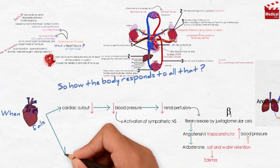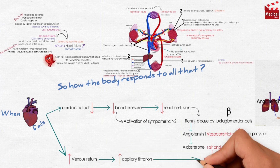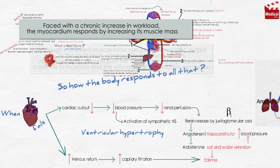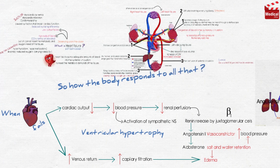Heart failure also increases venous return, which increases capillary filtration, causing edema. Faced with a chronic increase in workload, the myocardium responds by increasing its muscle mass, known as ventricular hypertrophy. Although increased muscle mass can increase cardiac output in the short term, contractility eventually suffers as the metabolic demands of the hypertrophied myocardium continue to increase and the efficiency of contraction decreases.